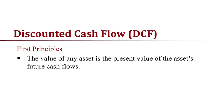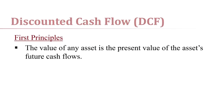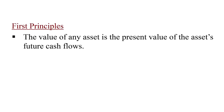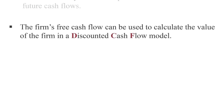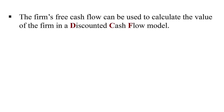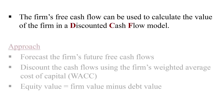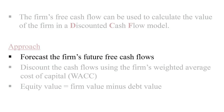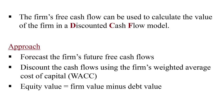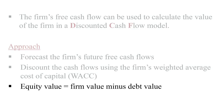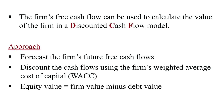Just as in the dividend discount model, we're going to start with first principles. The value of any asset is simply the present value of an asset's future cash flows. In the discounted cash flow or DCF model, we simply use the firm's free cash flows to calculate the value of the firm. Our approach is to forecast the firm's future free cash flows, and then discount those back using the firm's weighted average cost of capital as our discount rate. This provides the value of the entire firm, and then we calculate the equity value by subtracting out the debt value, since debt holders get paid first.